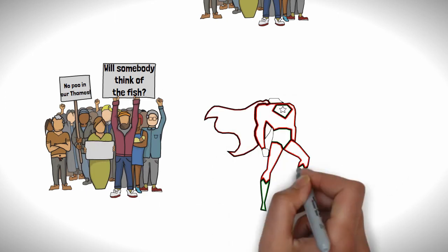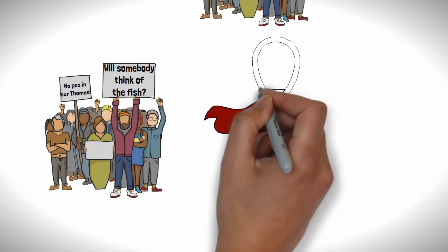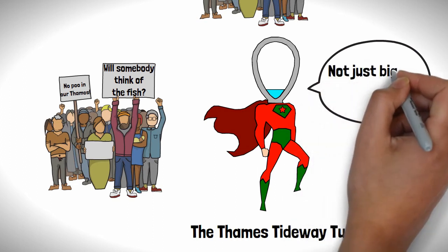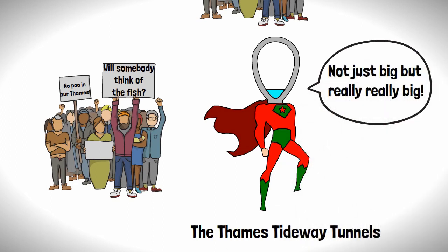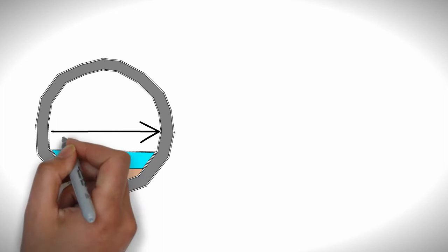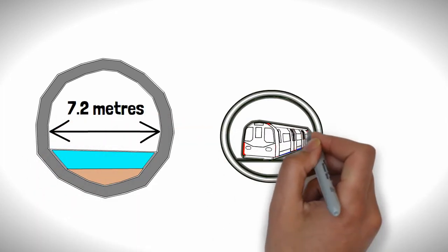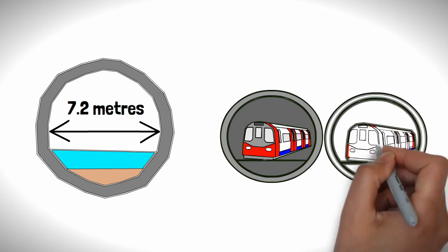To help solve this issue, London is in the process of constructing a new super sewer, which is to be called Thames Tideway Tunnels. And these tunnels are not just big, but really, really big. The main tunnel is to have a diameter of 7.2 metres, which for comparison is double the size of a standard tube tunnel.